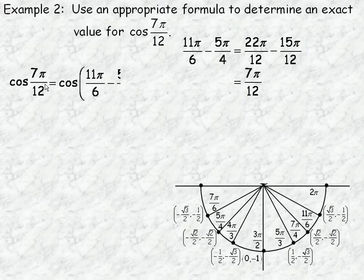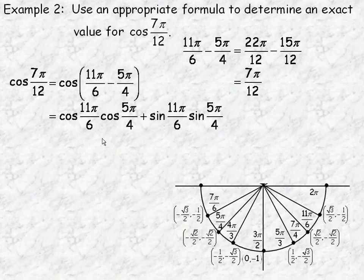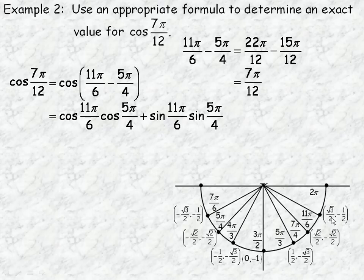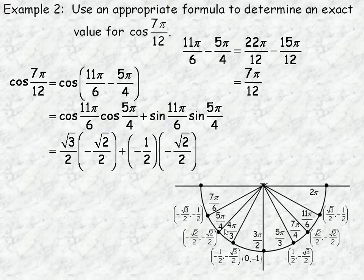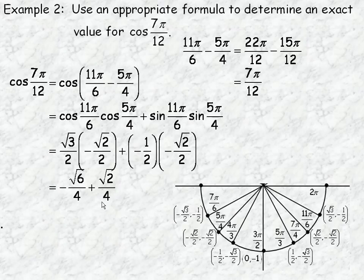Using cos(x minus y) = cos x cos y + sine x sine y: cosine(11pi/6) = root 3 over 2; cosine(5pi/4) = negative root 2 over 2; sine(11pi/6) = negative 1/2; sine(5pi/4) = negative root 2 over 2. Multiplying: root 3/2 times negative root 2/2 gives negative root 6 over 4, and negative 1/2 times negative root 2/2 gives plus root 2 over 4. With a common denominator, cosine(7pi/12) = (root 2 minus root 6) over 4.